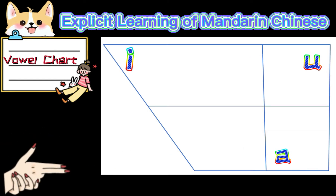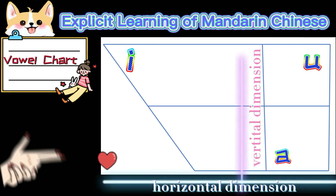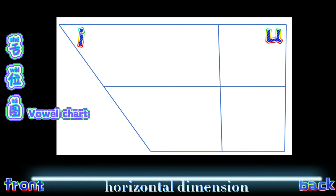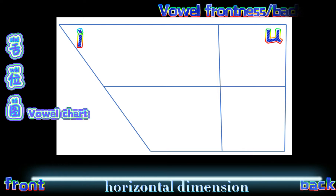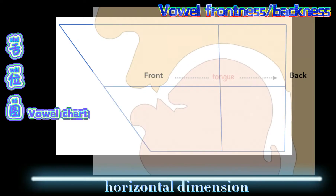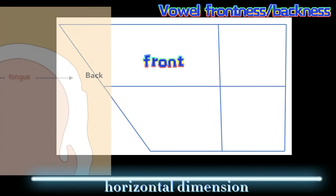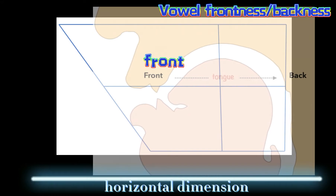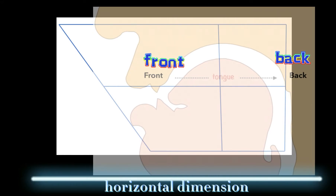In this diagram, you can see the horizontal dimension and the vertical dimension. The horizontal dimension describes front and back vowels concerning the front or back positions of the tongue. The phonetic term for the horizontal dimension is vowel frontness or vowel backness. When the tongue moves forward during the articulation of a vowel, we call it a front vowel. On the contrary, when the tongue moves backward during the articulation, we call it a back vowel.